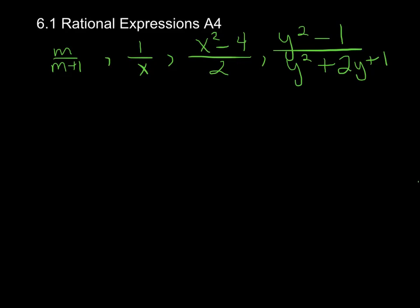This one here is x squared minus 4 over 2, so we've got the variable here. And this one we've got variables on both the top and the bottom, so you've got y squared minus 1 in the numerator, y squared plus 2y plus 1 in the denominator.